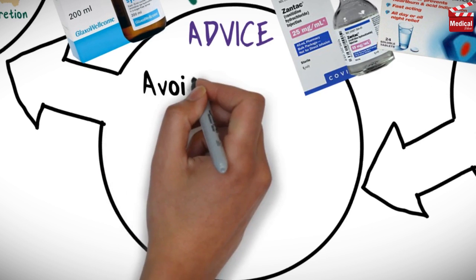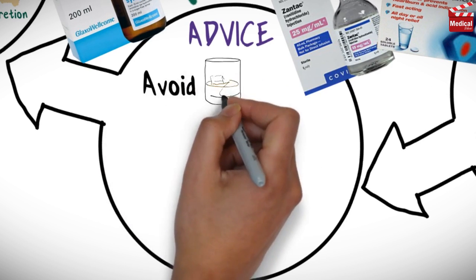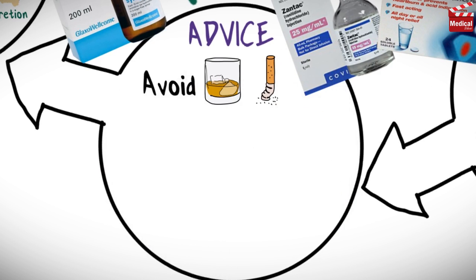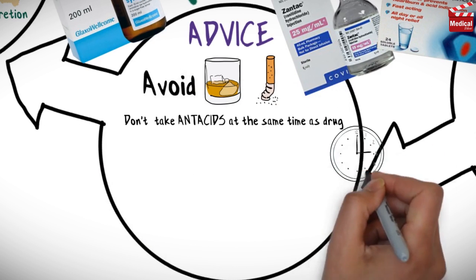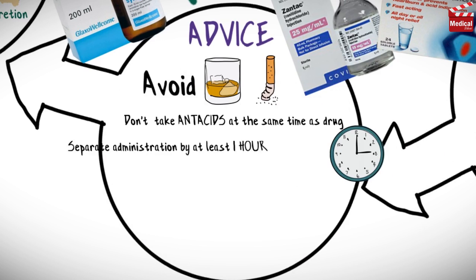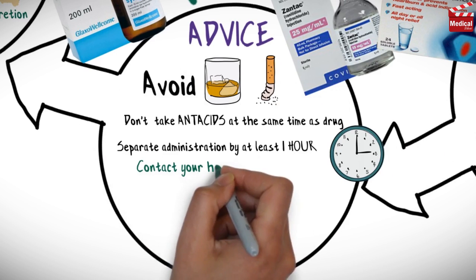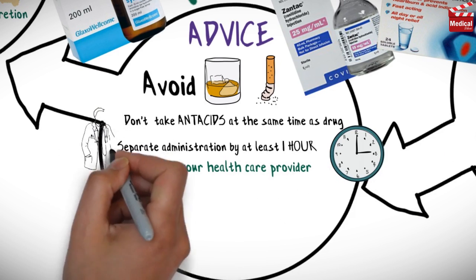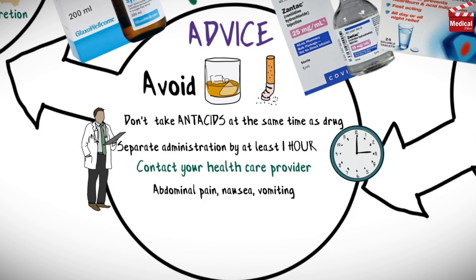Some advice to patients receiving ranitidine: avoid alcohol and smoking, as these may worsen the condition. Do not take antacids at the same time as the drug — separate administration by at least one hour. If you notice abdominal pain, nausea, or vomiting, report these symptoms to your physician.